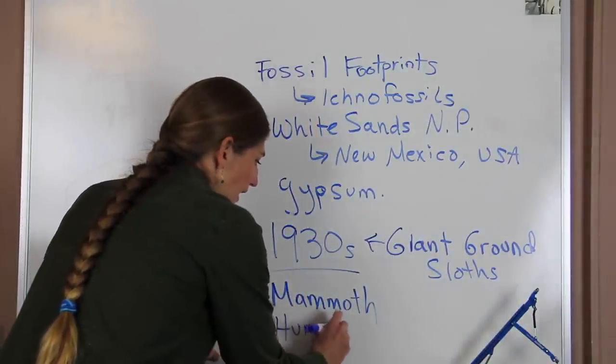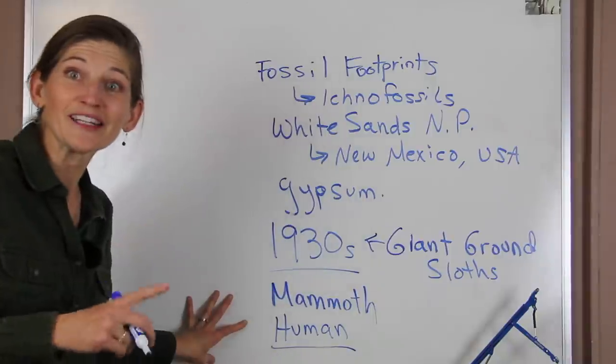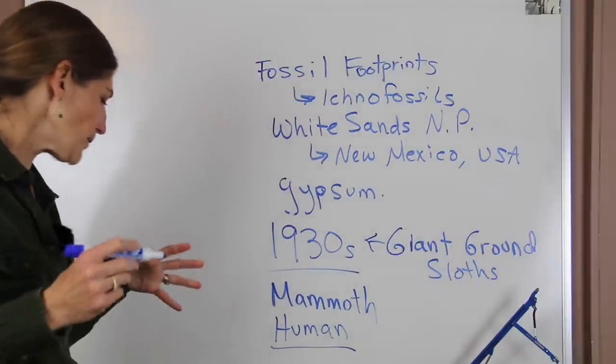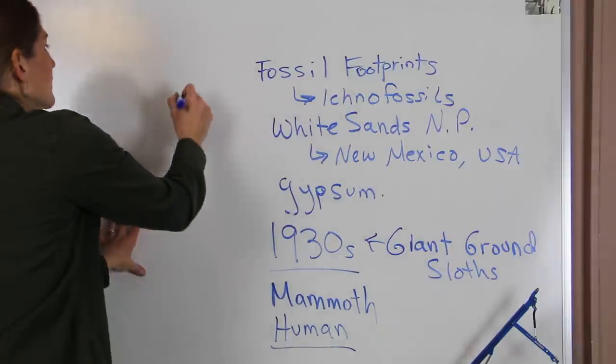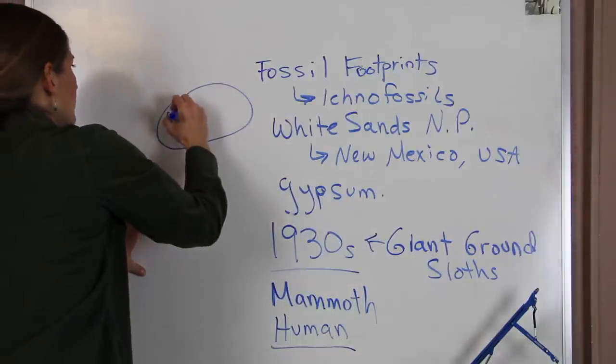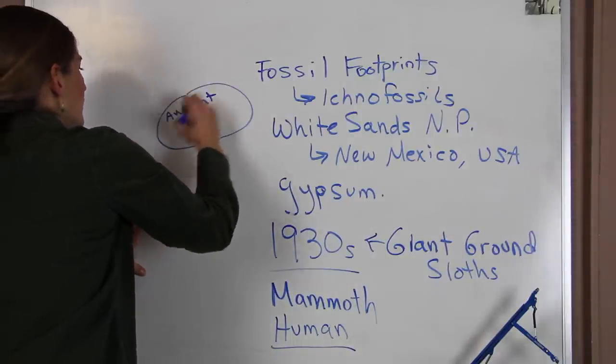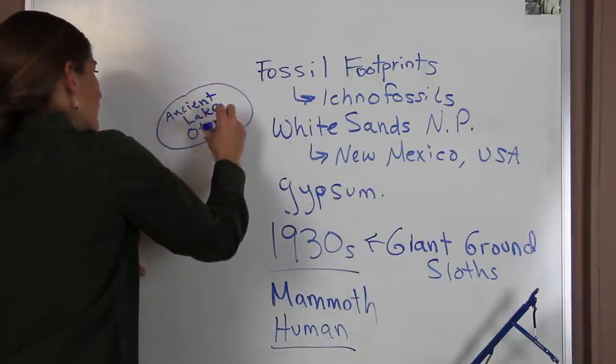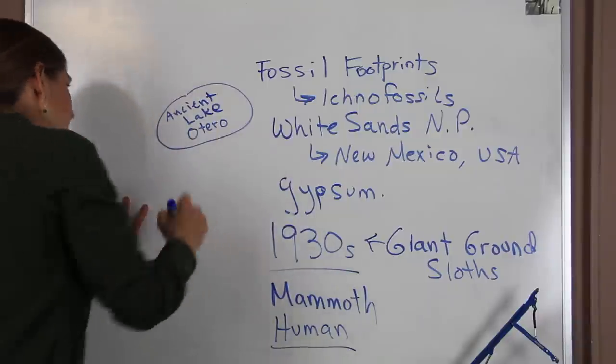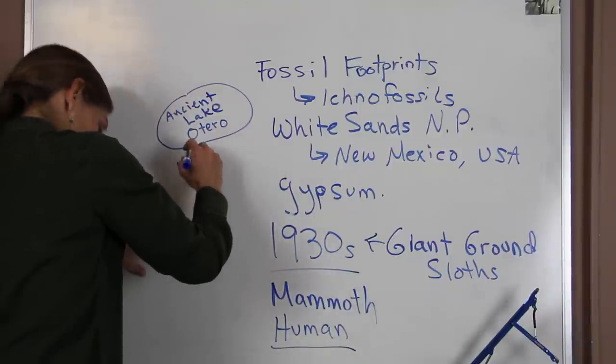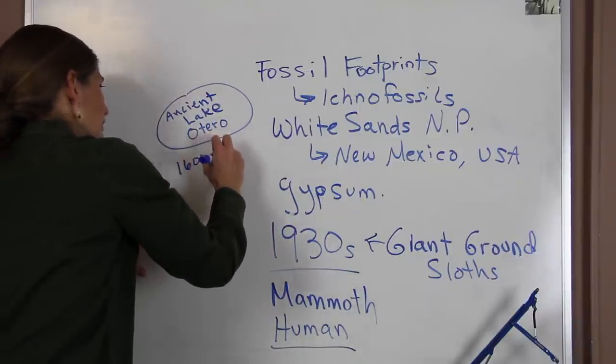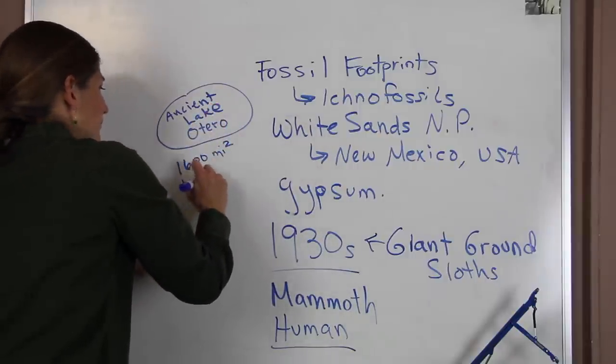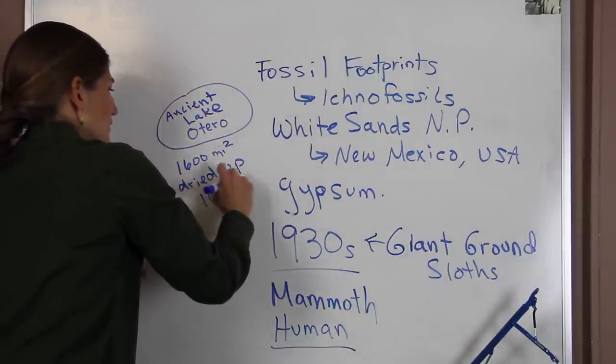What's interesting about these footprints is they're found around an area that once had a lake - ancient Lake Otero. This was a lake that was about 1,600 square miles in size and it dried up about 10,000 years ago.